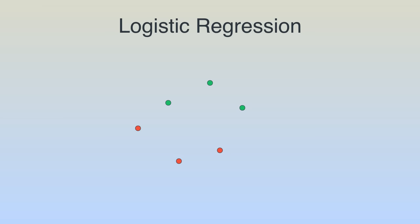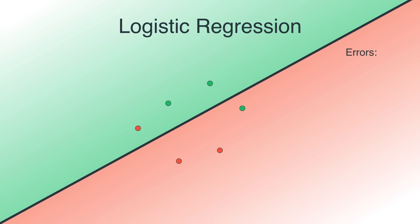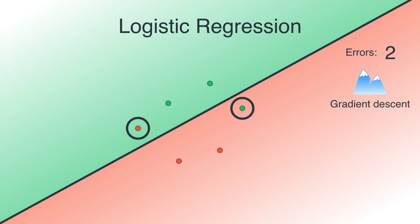How do we find the line that best cuts the data in two? With six points — three green, three red — a computer starts by drawing a random line, labels the region above as green and below as red. Just like with linear regression, we measure how bad the line is by counting how many points we're misclassifying — we call that number the error. This line misclassifies two points, one red and one green, so it has two errors. We then move the line using gradient descent to minimize the number of errors.